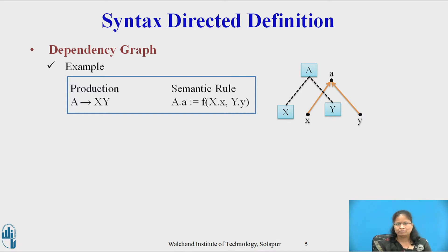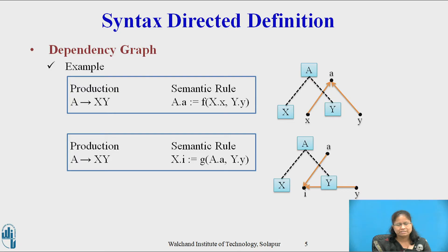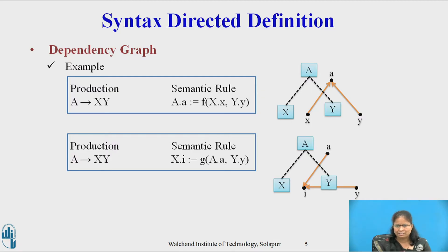The dotted lines represent the parse tree and are not part of the dependency graph. Second example: if the production A derives x y has the semantic rule x.i = G(A.a, y.y) associated with it, then there will be an edge to x.i from A.a and also an edge to x.i from y.y, since x.i depends on both A.a and y.y. The dotted line represents the parse tree and is not part of the dependency graph.